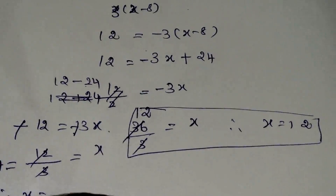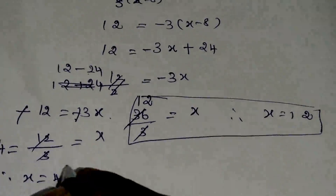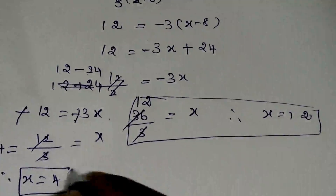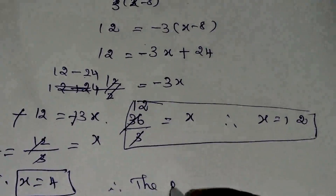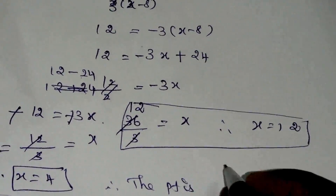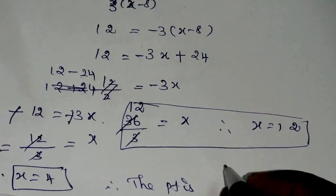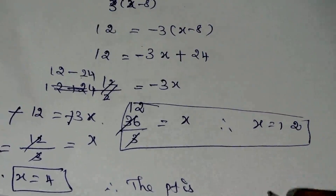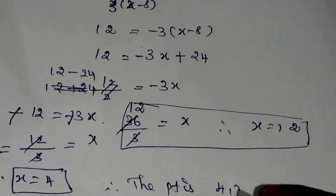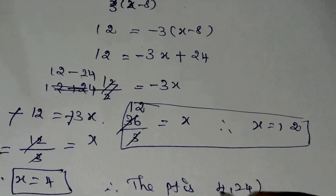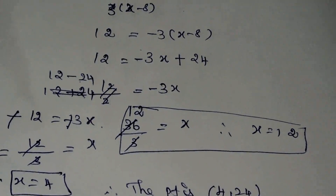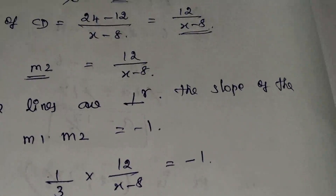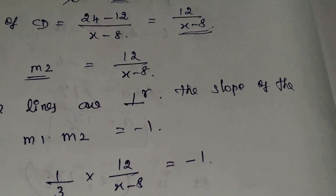Therefore x is equal to 4, and the point is x comma 24, which gives us 4 comma 24. Students, if you have any further clarification, please comment in the comment box and subscribe to our channel. Thank you, students.